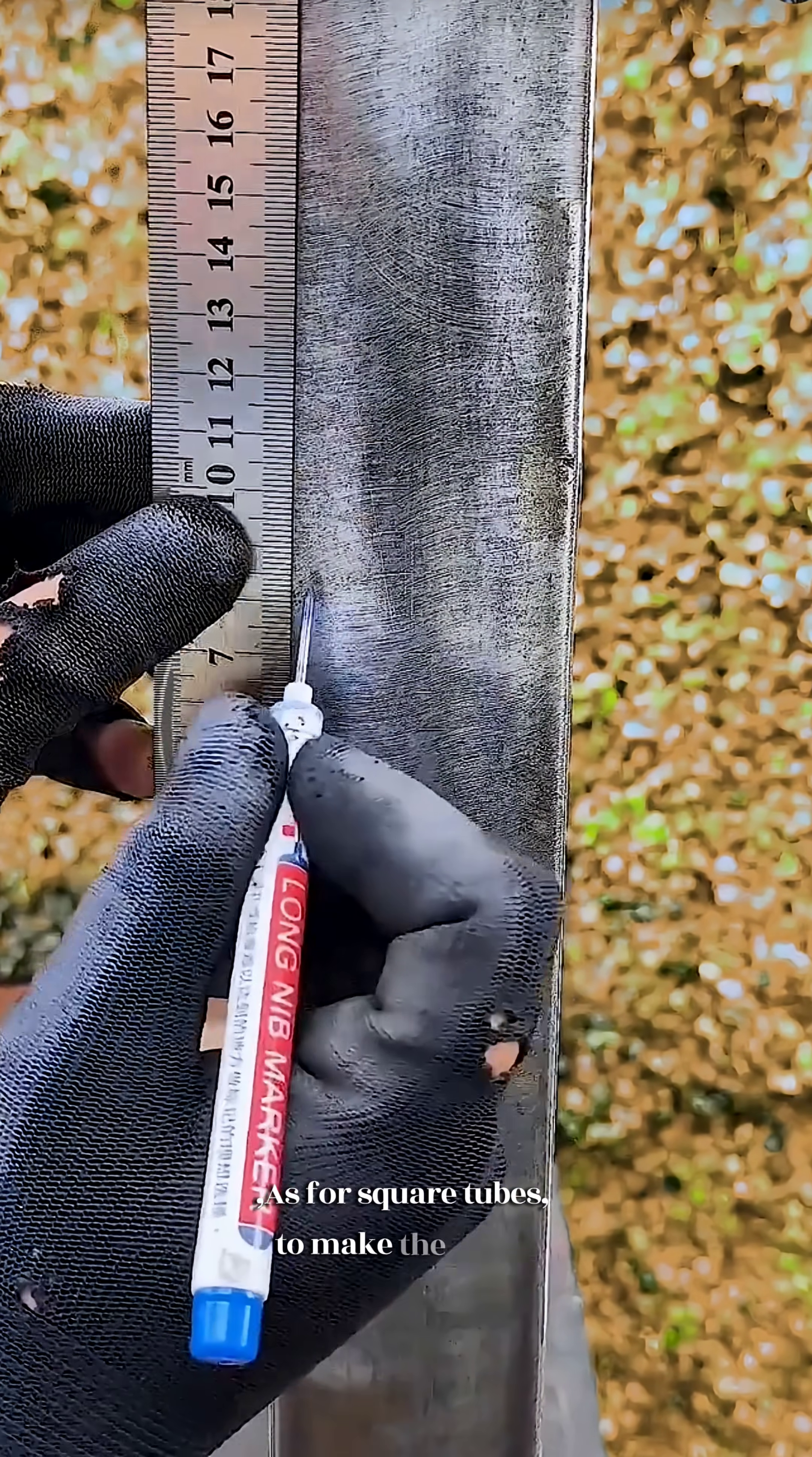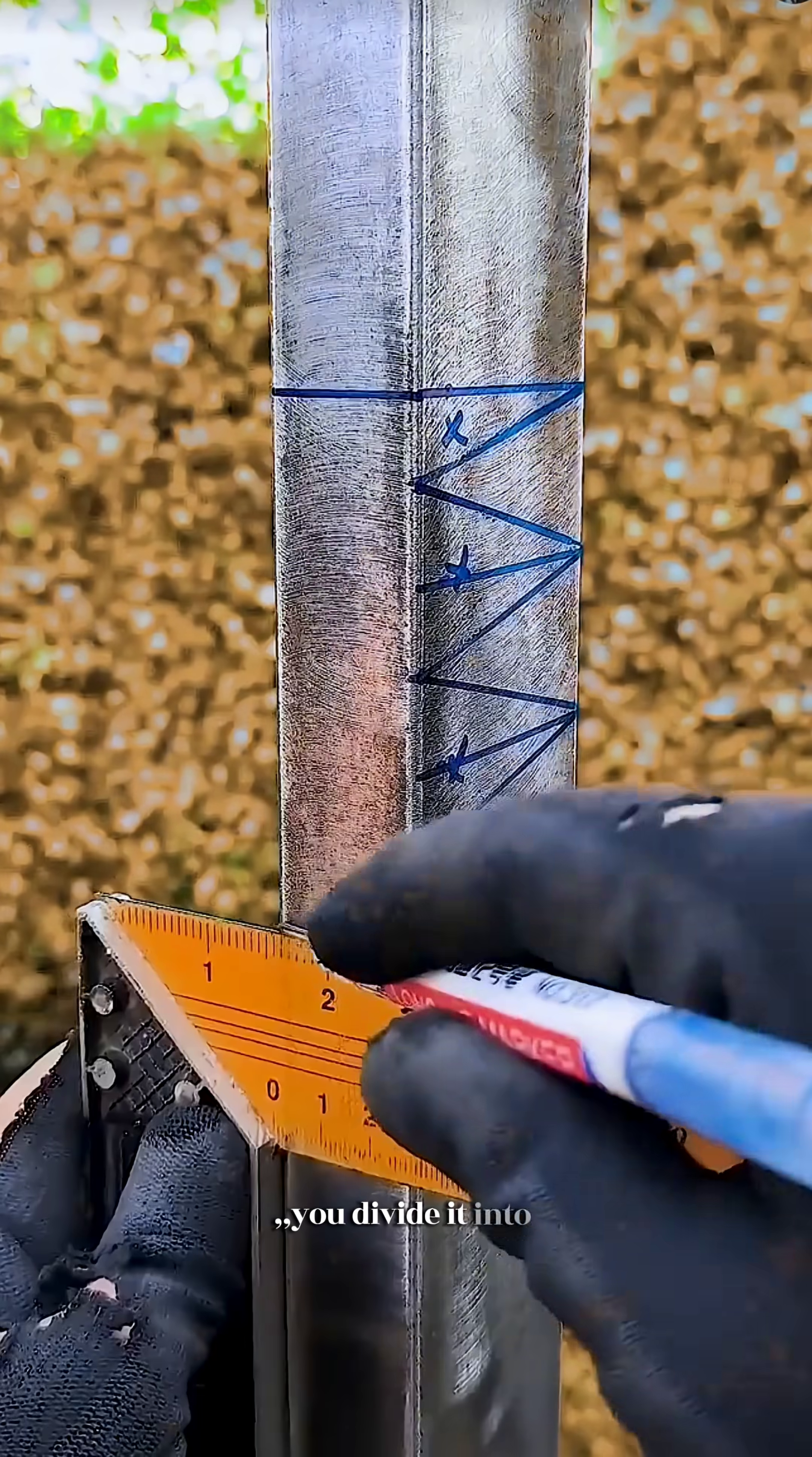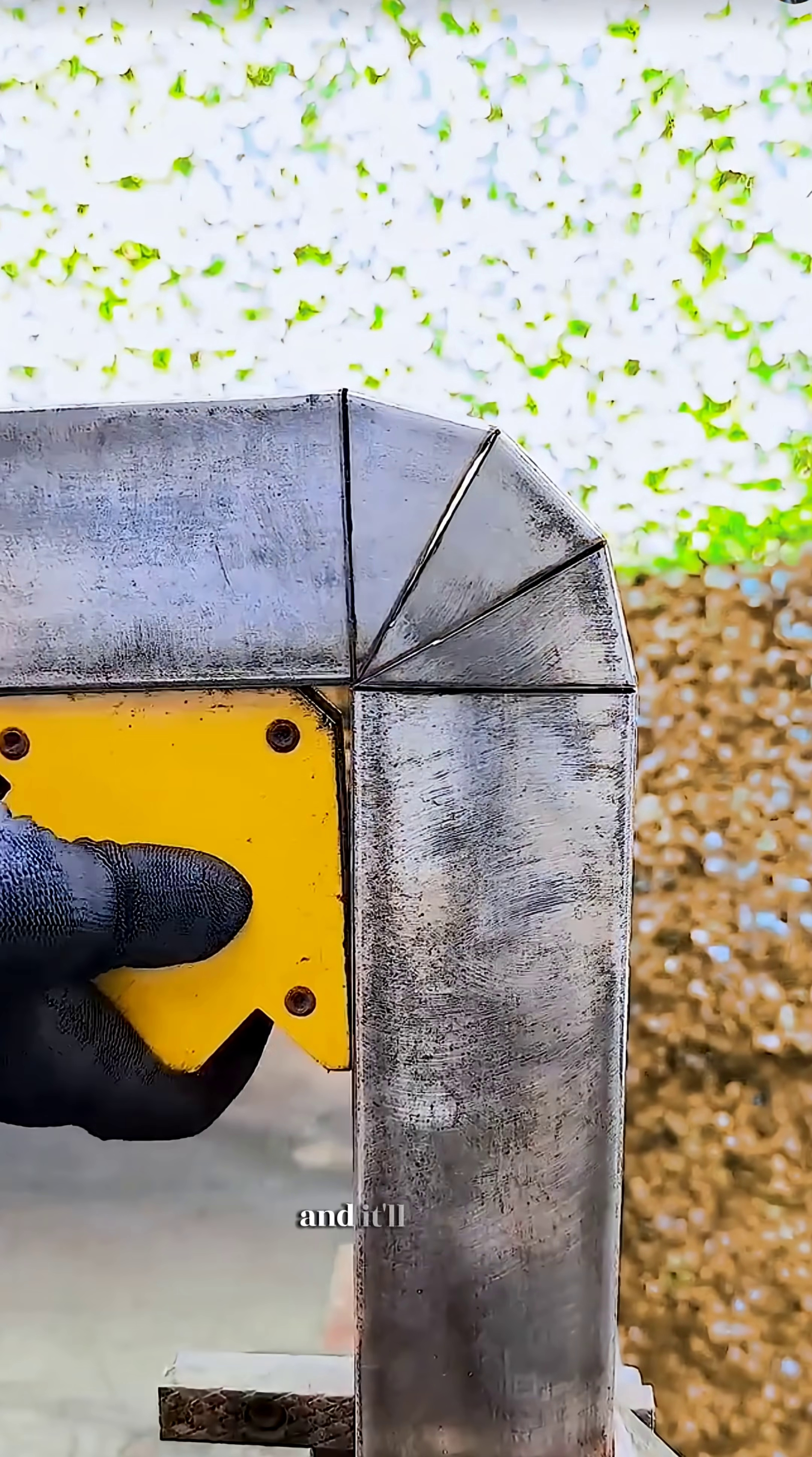As for square tubes to make the same corner, you do the same thing, making a bend. Since the bend is 90 degrees, you divide it into three corners, each 30 degrees this way. You won't make a mistake, just bend it like this, and it'll be just right.